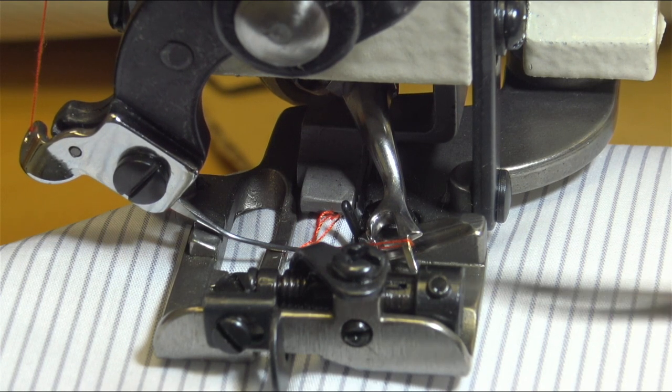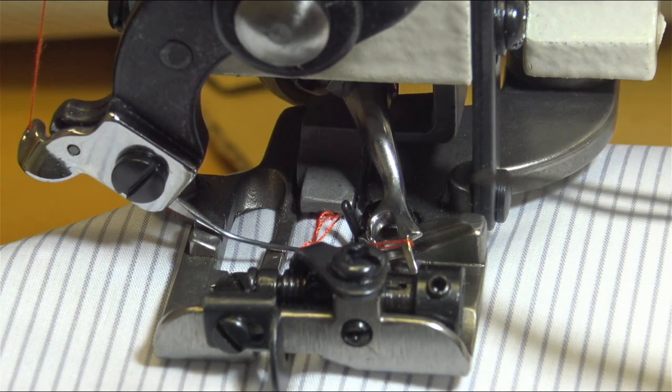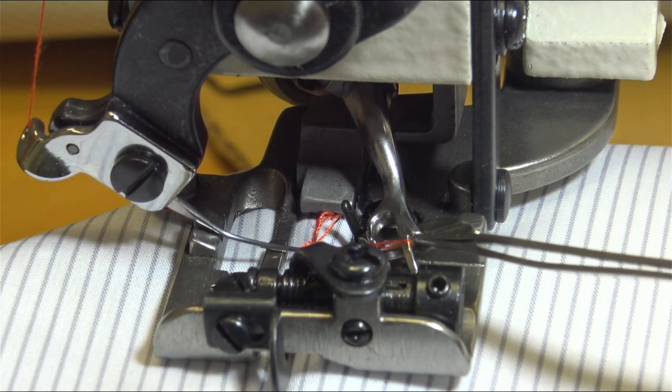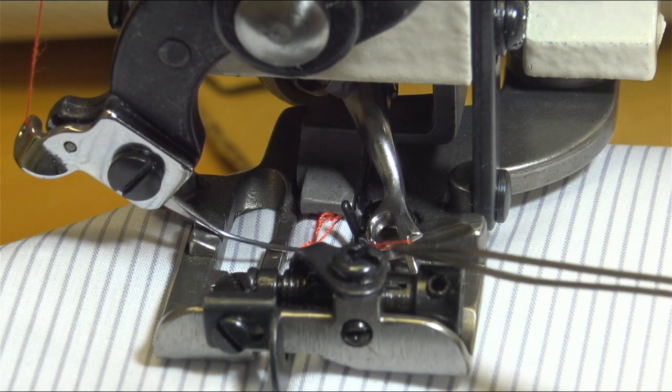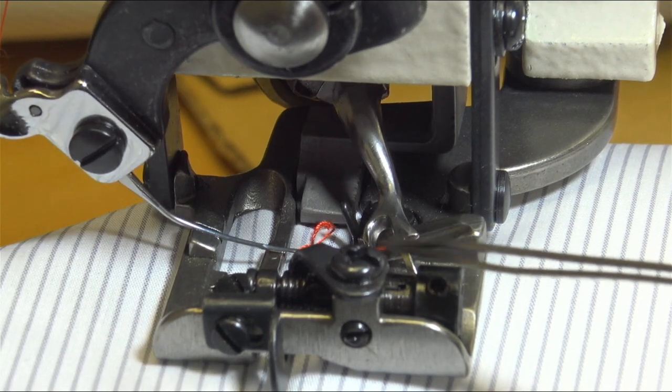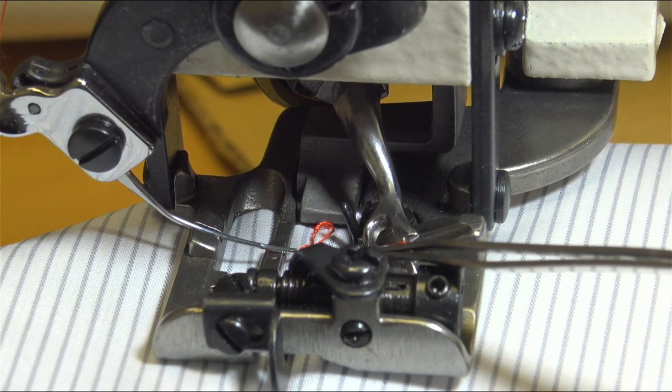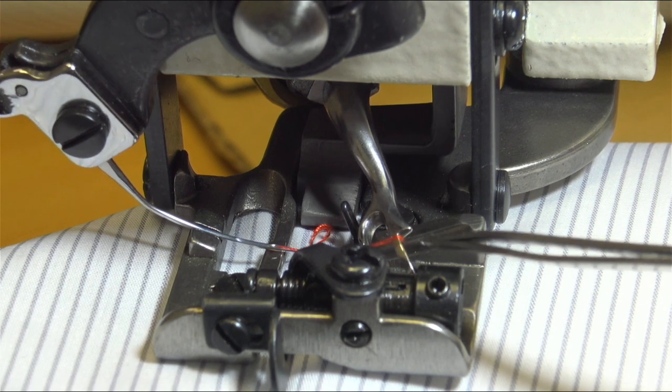Then now the needle is already returned. And then the looper has two stop points to stop the thread moving in. One is here, the shorter part. One is the longer part here. Stop the thread.